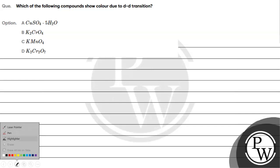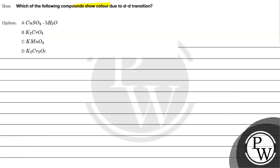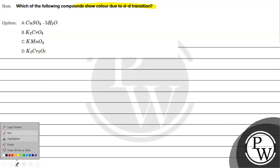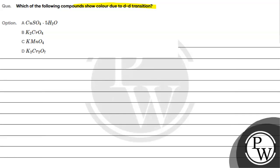Let's read this question. Which of the following compounds show color due to d-d transition? Option A: copper sulfate (CuSO₄·5H₂O). Option B: K₂CrO₄. Option C: KMnO₄. Option D: K₂Cr₂O₇.